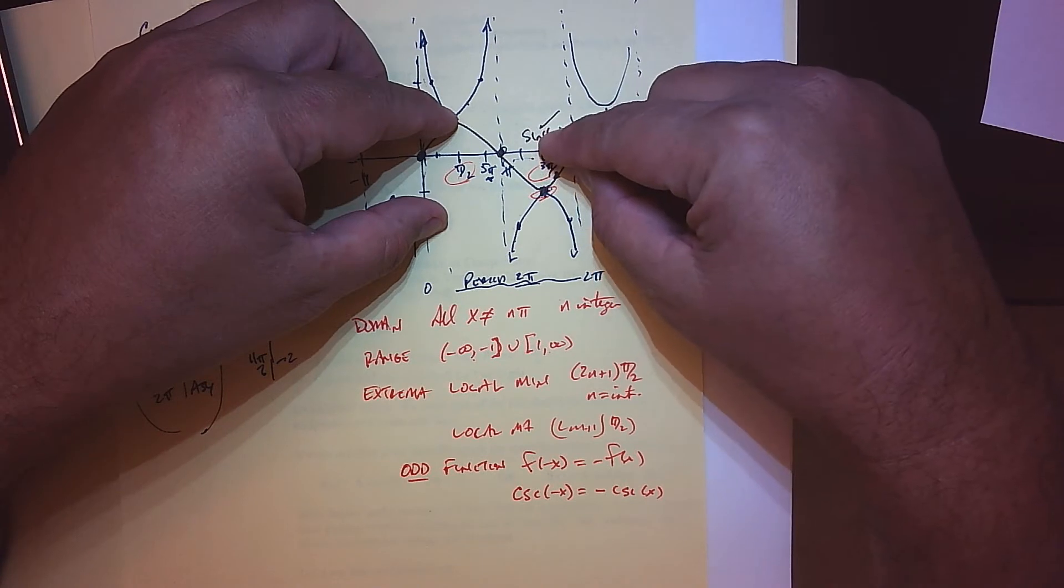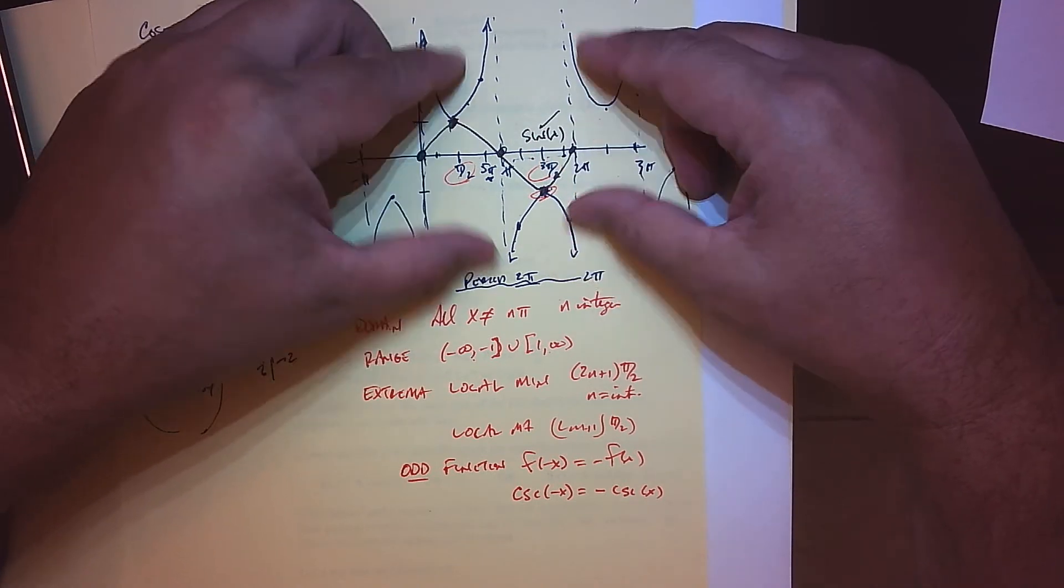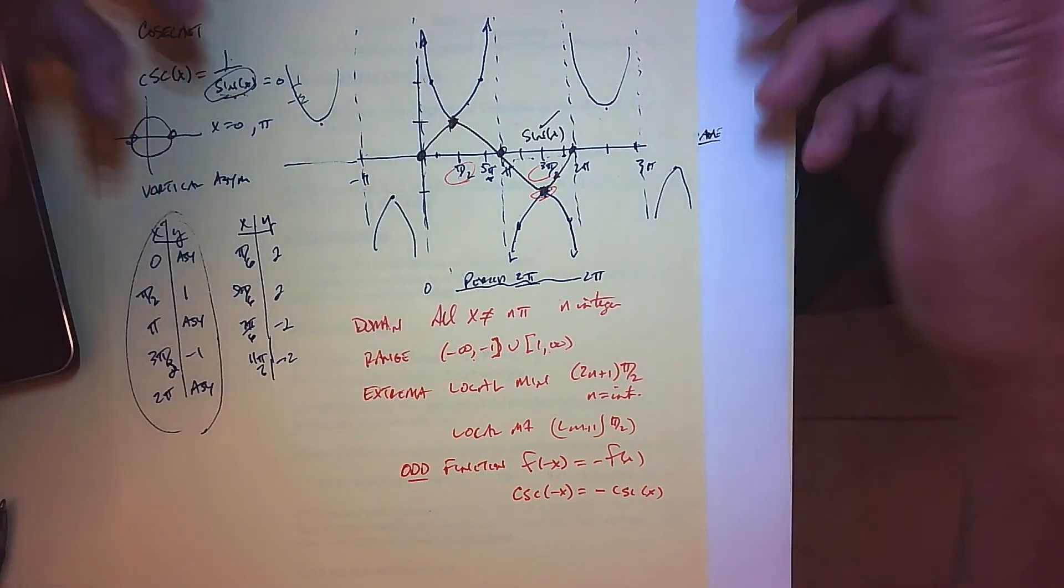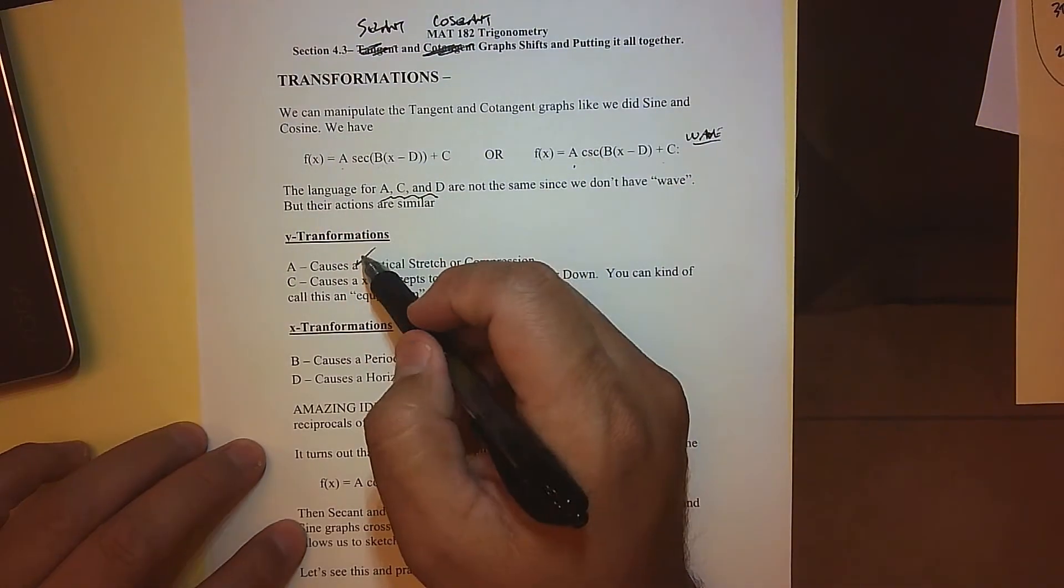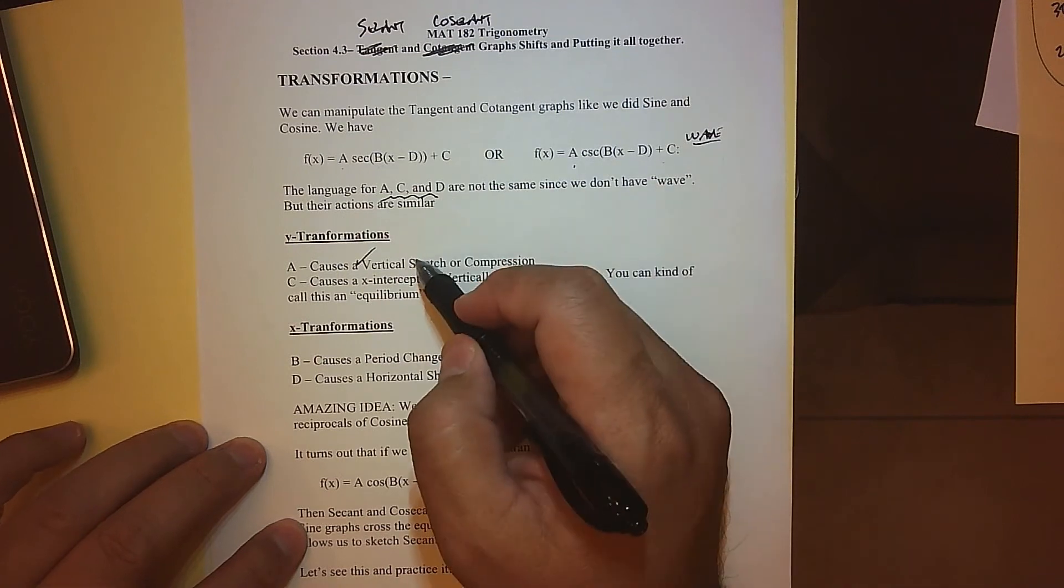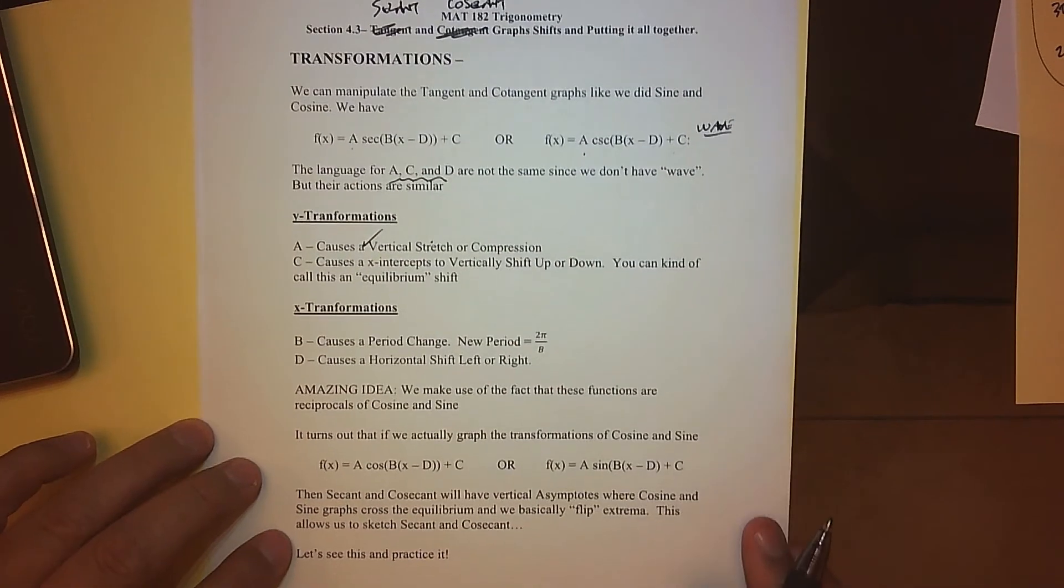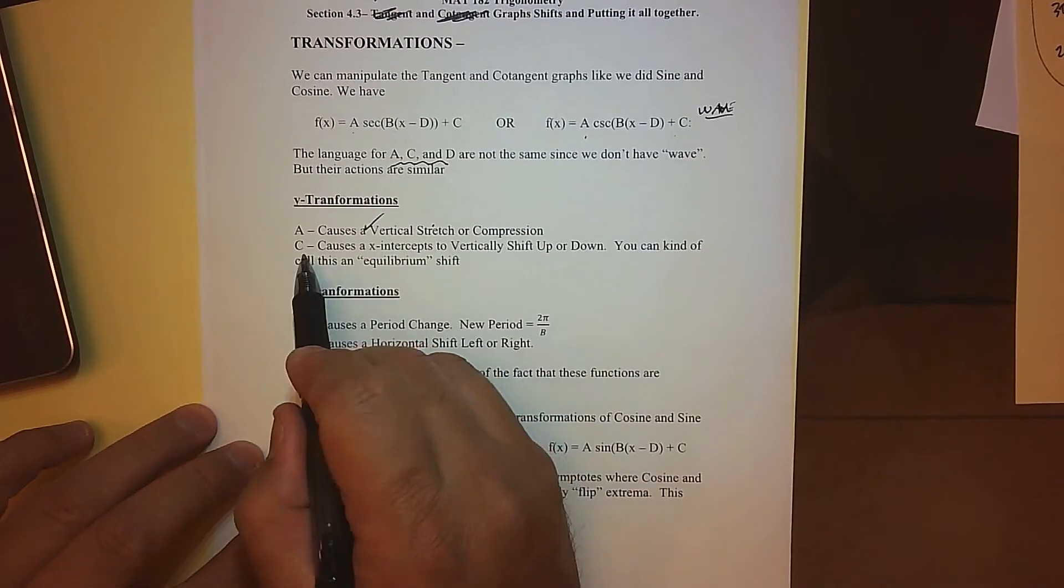Whatever happens to the sine graph tells us a lot about what happens to the cosecant graph. Same thing with secant. So there's really not an amplitude change unless we're talking sines and cosines, but we do get a vertical stretch or compression with the a.